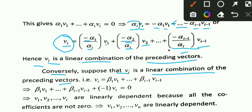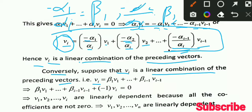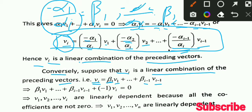Conversely, suppose that V_i is a linear combination of the preceding vectors. If V_i is a linear combination of the preceding vectors, then we can write V_i as: beta_1 V1 + ... + beta_{i-1} V_{i-1} equals V_i. Rearranging: beta_1 V1 + ... + beta_{i-1} V_{i-1} minus V_i equals 0.